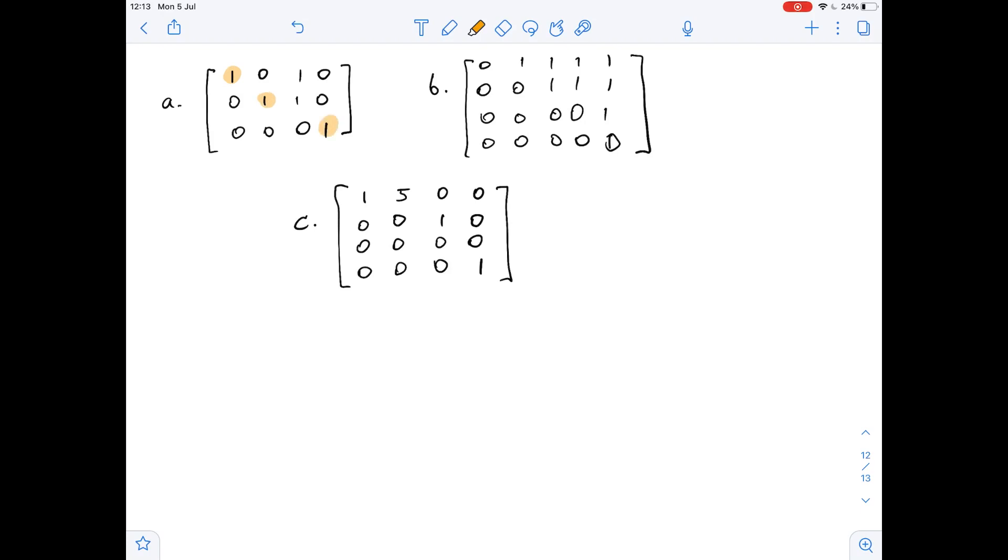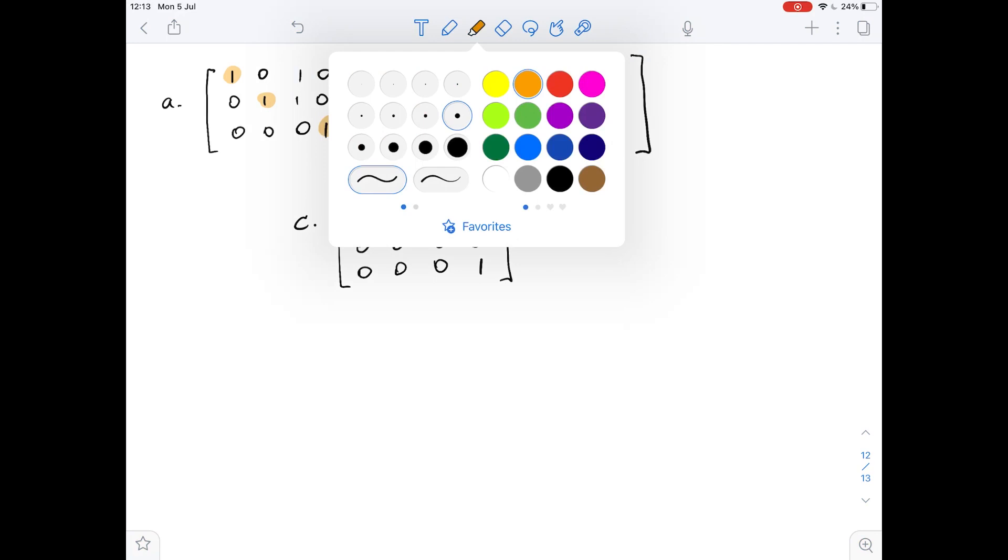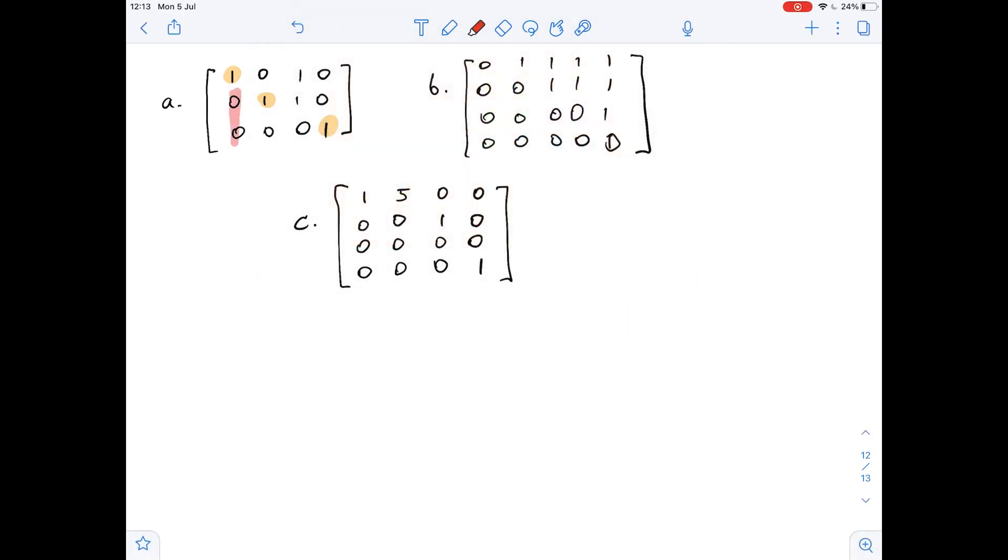And each leading one is the only non-zero entry in its column. So in this column and in this column, there is only one one. In this column, the rest of the entries are zeros, and in this column the rest of the entries are zeros.